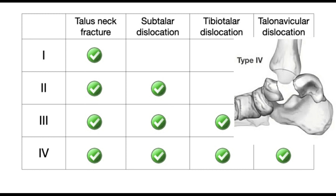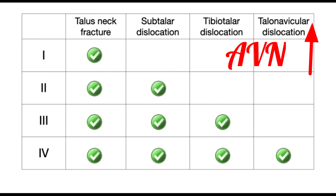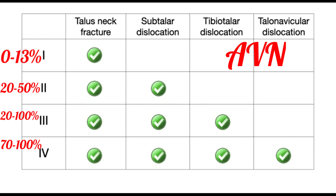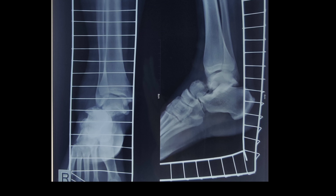Type 4 involves a talus neck fracture along with subtalar, tibiotalar, and talonavicular dislocation. As we go down the classification, the incidence of avascular necrosis increases: 0–13% in type 1, 20–50% in type 2, 20–100% in type 3, and 70–100% in type 4. Let's analyze the x-rays of the patient.